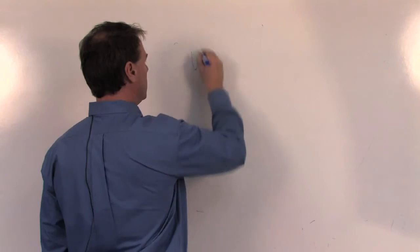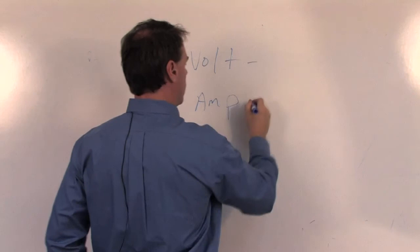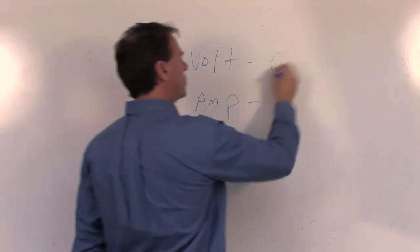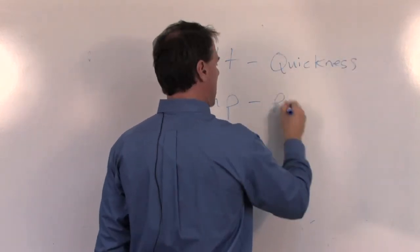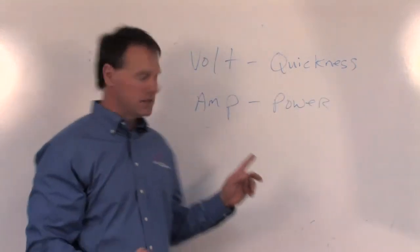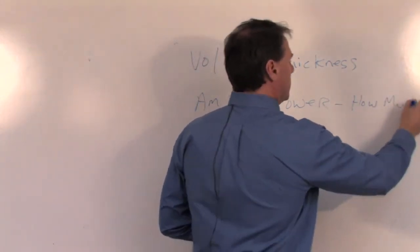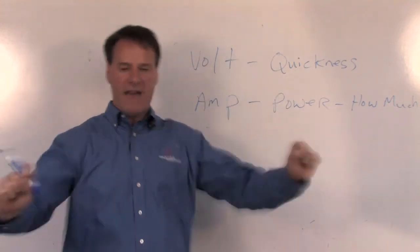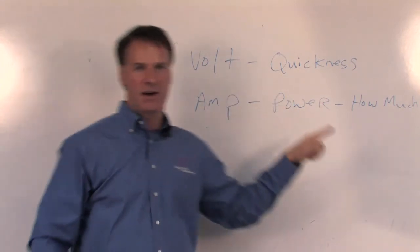There are just a couple other key things: voltage and amperage. There's two quick stories to explain the difference between voltage and amperage. Voltage is quickness and amperage is power. The two examples that my professor gave me was at the gym, lifting weights on the bench press—how fast you can push up the weights is what voltage is.